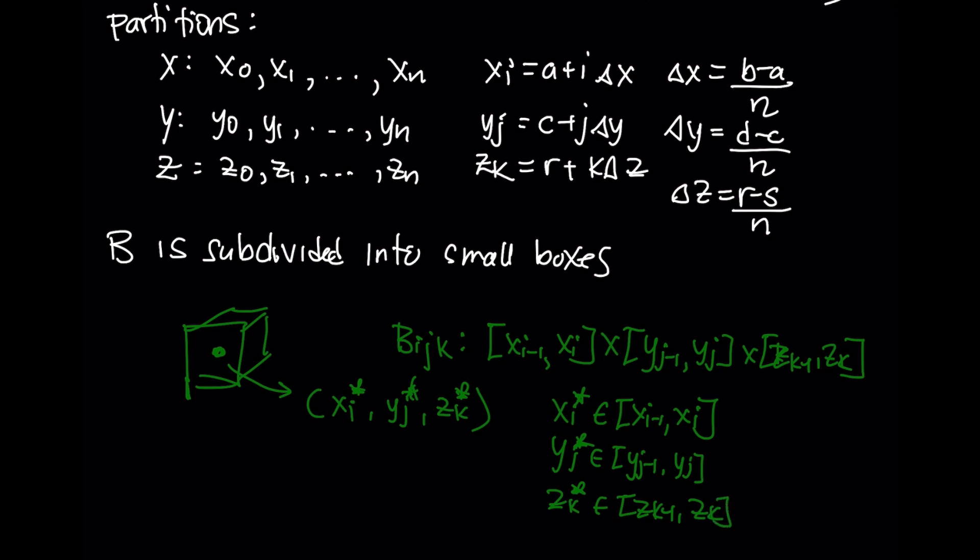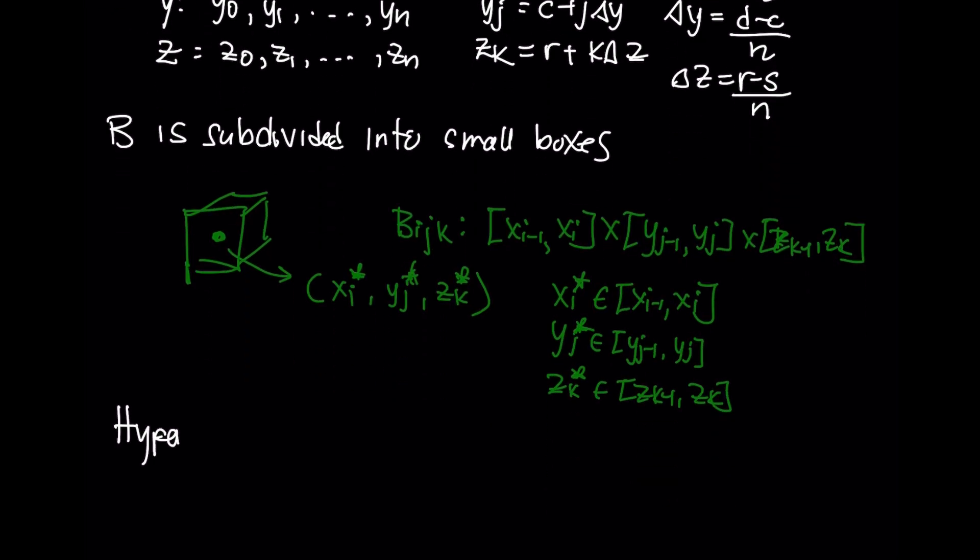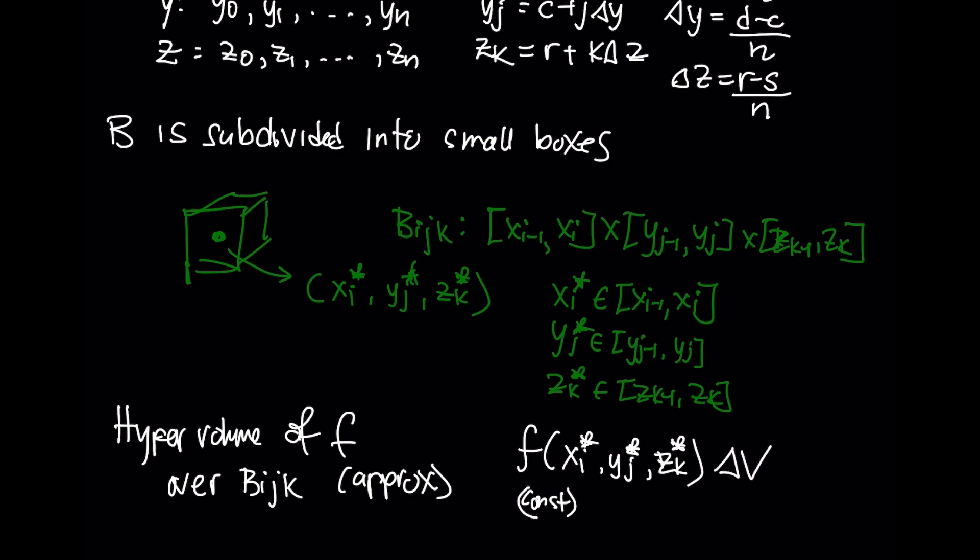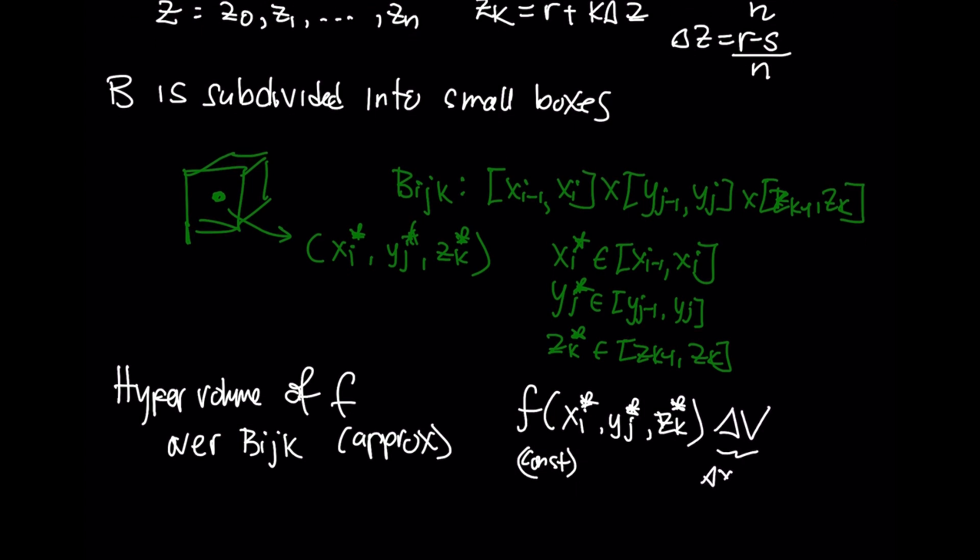We are going to approximate the hypervolume of our function over this box B_IJK. As always, take the value of the function to be a constant dependent on that sample point. So we will pick one location over that box and then multiply by the volume of that box. Delta X, delta Y, delta Z multiplied together. So as before, this will be our delta Y, this will be our delta X, and this will be our delta Z.